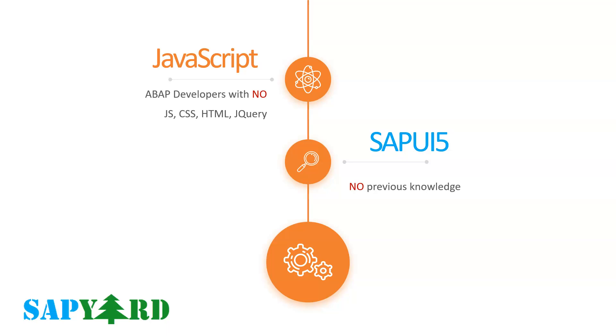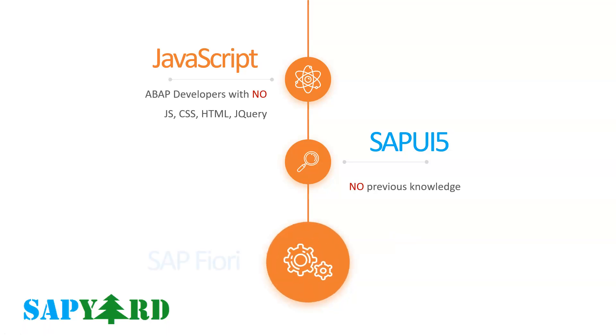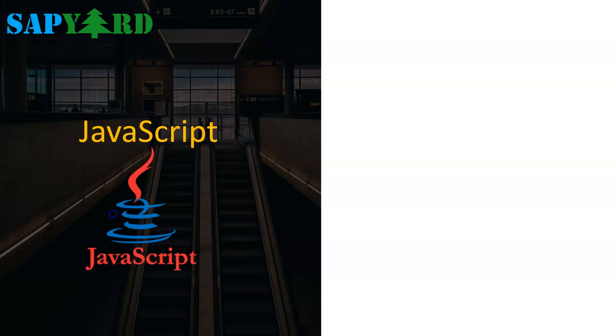SAPUI5 takes pride in being a little different. There are just two main topics in this training: first is JavaScript and second is SAPUI5. These two topics will be the foundation for our next training in SAP Fiori. We will cover JavaScript in detail and learn CSS, jQuery and HTML only to the extent really needed by developers in real SAP front-end projects.